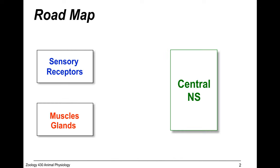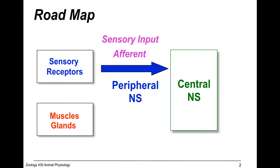Today we're talking about neurons — these really cool molecules that allow animals to respond to information and have behaviors. We have the sensory and peripheral nervous system, which is important for connecting the sensory receptors to the central nervous system, getting sensory input through the afferent pathways.